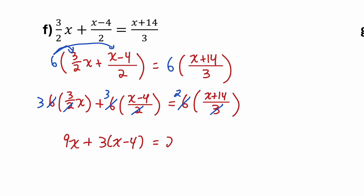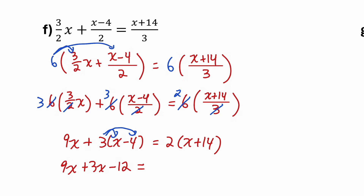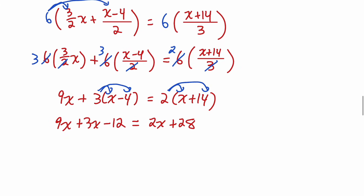I'll expand both sides of the equation. On the left, I have to do 3 times x minus 3 times 4, giving me 9x plus 3x minus 12 equals — on the right — 2 times x plus 2 times 14, which gives me 2x plus 28. On the left, I see a pair of like terms: 9x plus 3x is 12x.